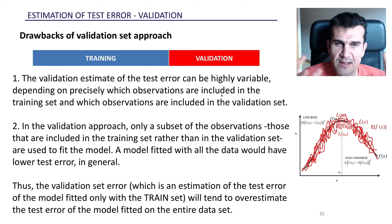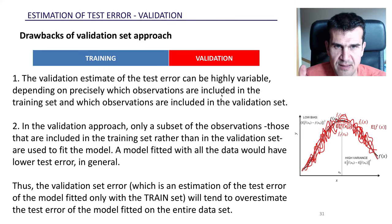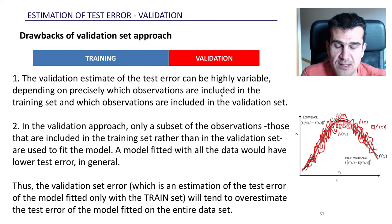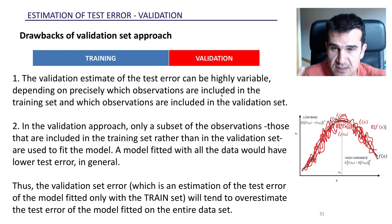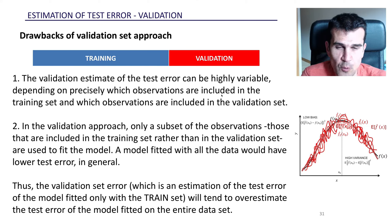There are a couple of issues with this validation approach. The first one is that our estimate will be somewhat dependent on how we partition the dataset. Since this division is somewhat arbitrary, if we partition it a different way we will get a different estimate of the test error — so we should be aware of that.